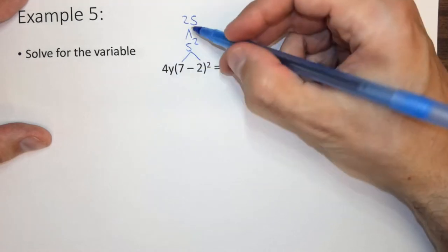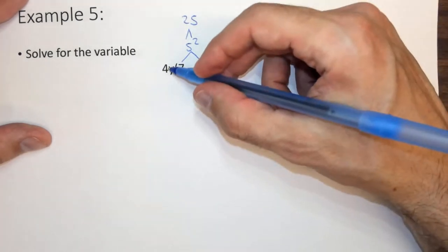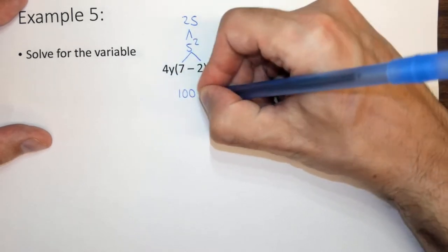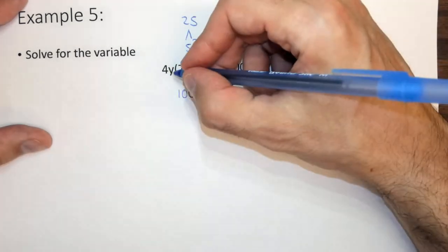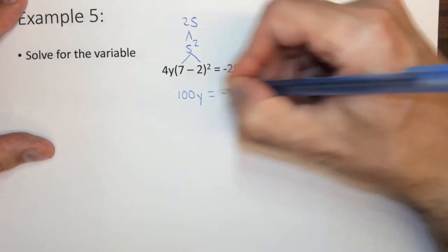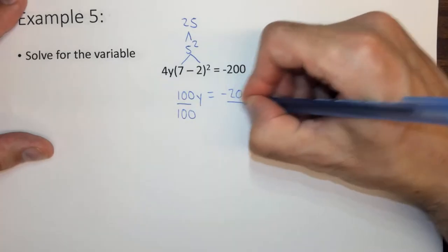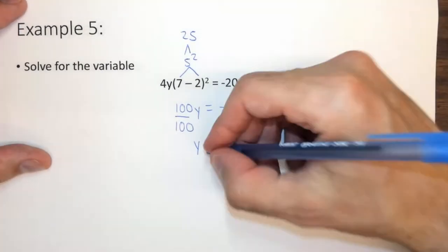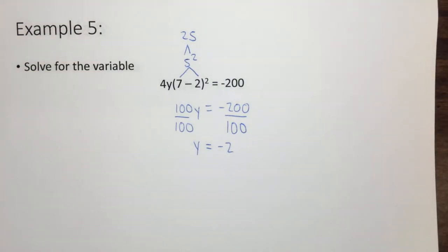We now have 4y times 25 equals 200. Well 4y times 25 is 100y, 4 times 25 and then just keep the y, equals negative 200. Divide by 100, divide by 100. Y equals negative 2. So here we've isolated the y variable.